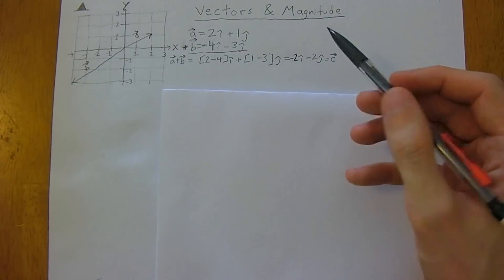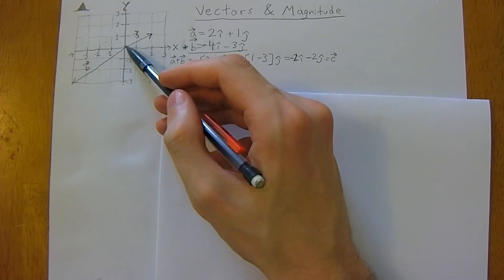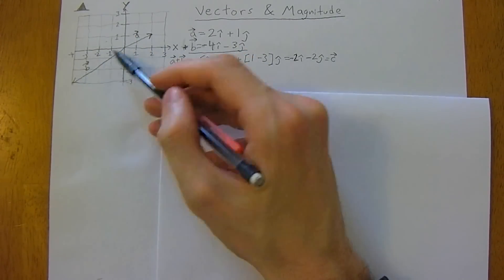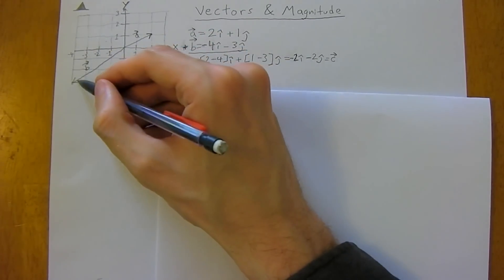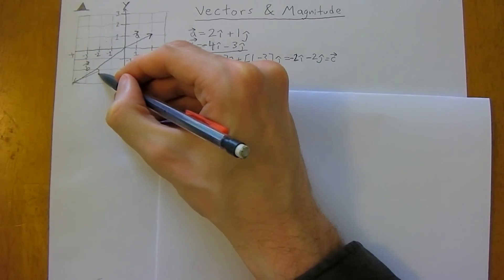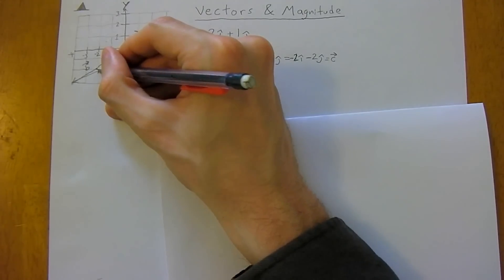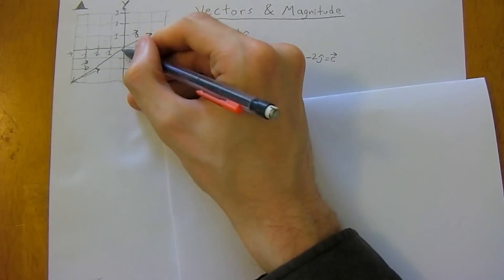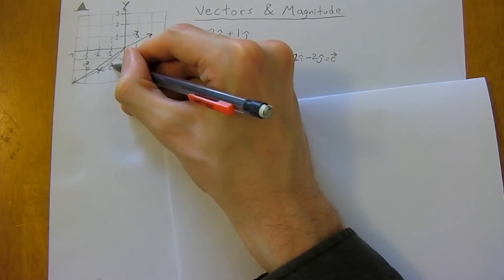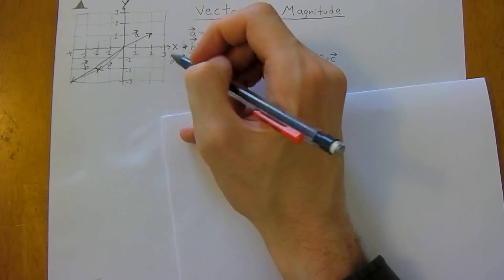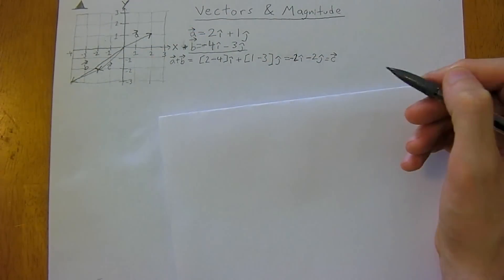We'll call this new vector, vector C. So we've just added these two vectors, and you can actually do this graphically by placing the base of one arrow at the tip of the other arrow. So this would move over two units. But keep in mind this gets a lot easier when you start working in three dimensions. Our new vector C should be negative 2i-hat and negative 2j-hat — and that's exactly what we got.